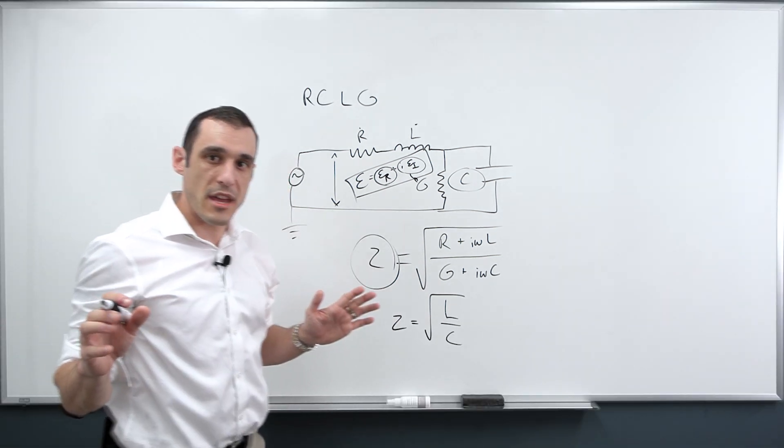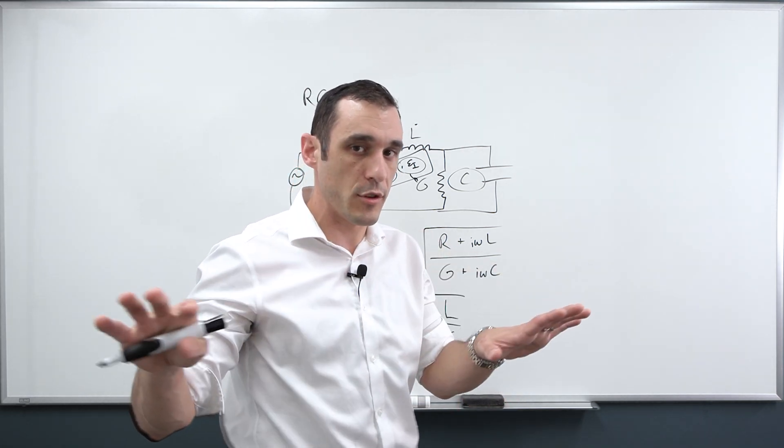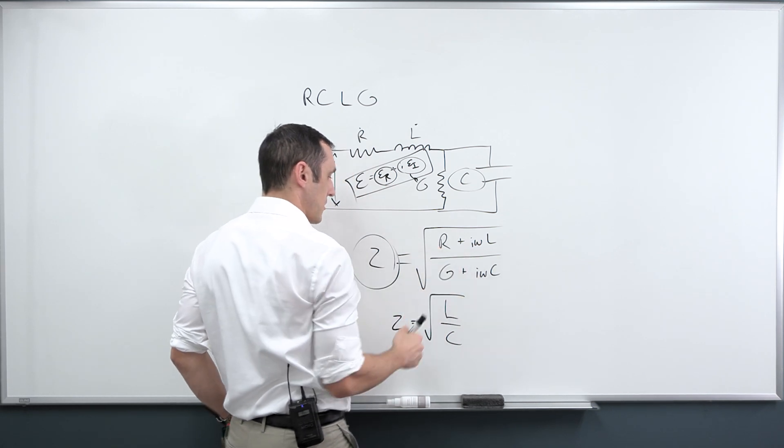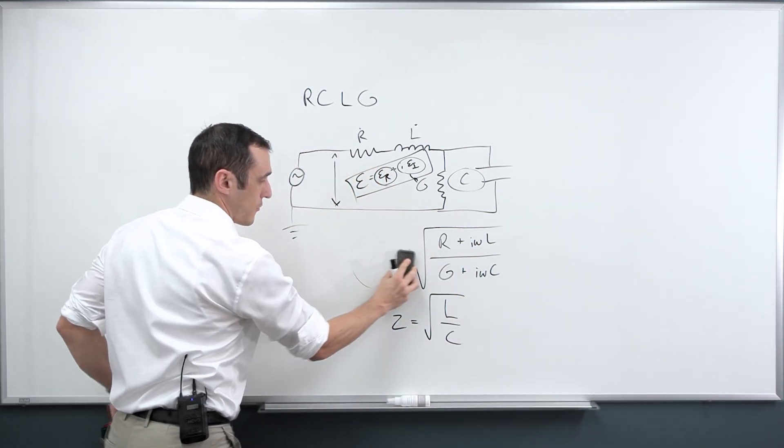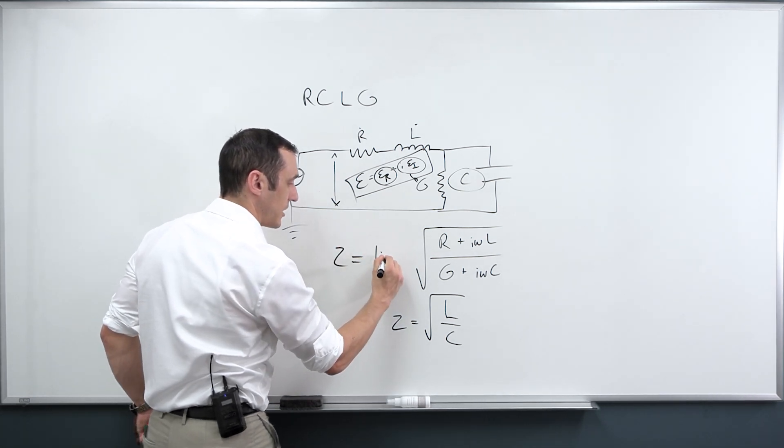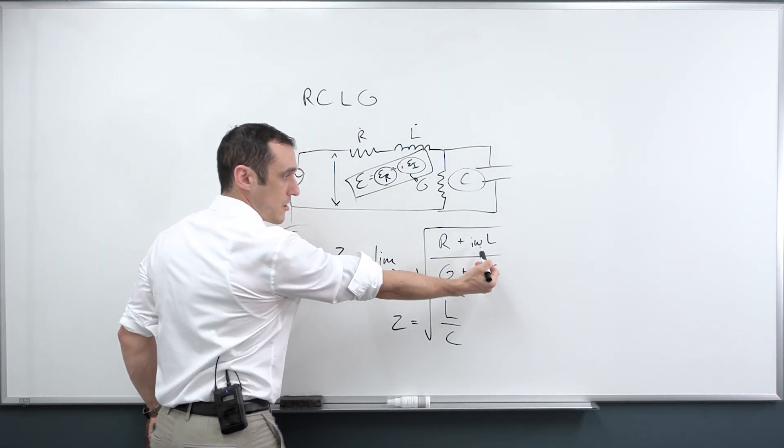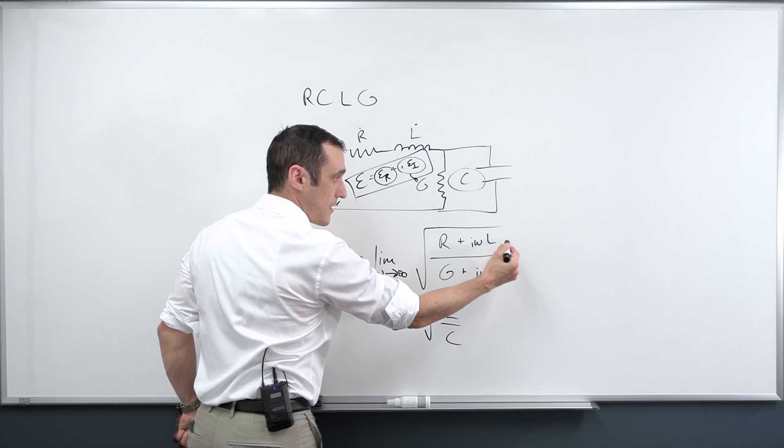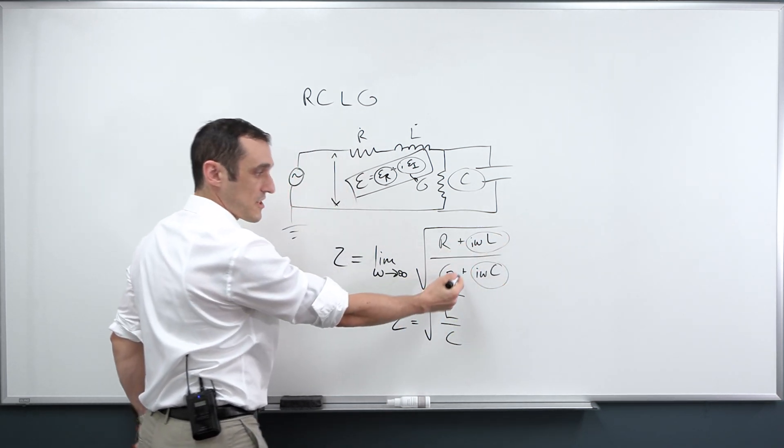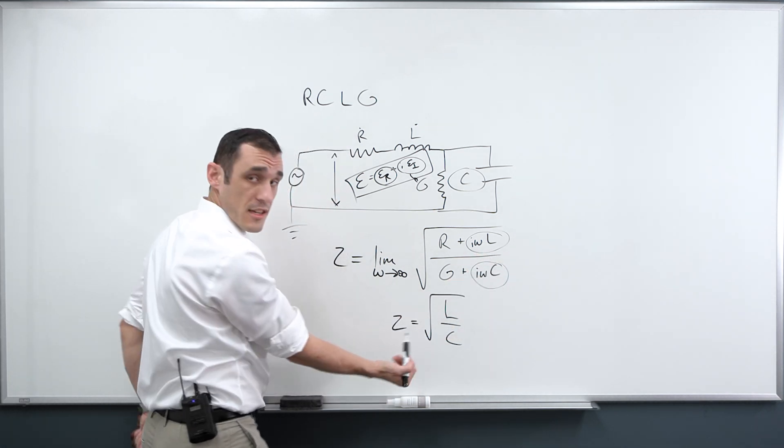So the typical approximation here that's used in transmission line theory and really just the bare bones basic theory is if I have this equation and if I just, for the moment, write this out of Z equals the limit as omega goes to infinity in this equation. Well, if omega goes to infinity, these two terms get really big. These two terms stay constant. And so this will converge to this equation.